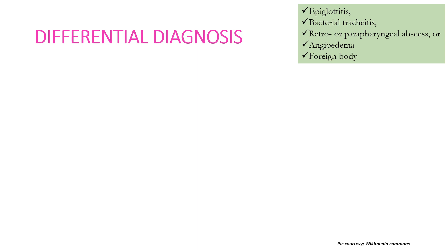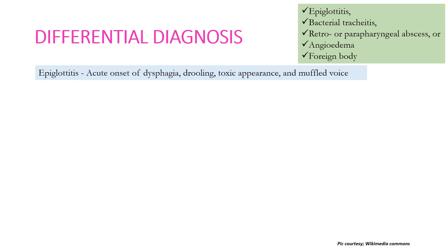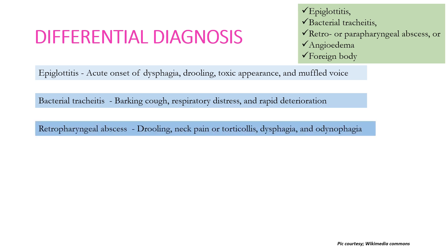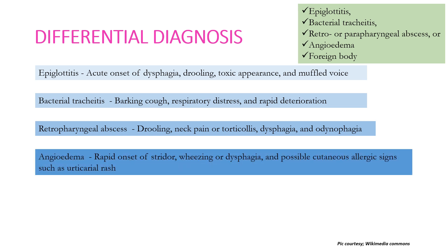Common differential diagnoses of croup include epiglottitis, bacterial tracheitis, retropharyngeal or parapharyngeal abscess, angioedema, and foreign body. Epiglottitis is characterized by acute onset dysphagia, drooling of saliva, toxic appearance, and muffled voice. Bacterial tracheitis presents with barking cough but with rapid deterioration. Retropharyngeal abscess presents with drooling, neck pain or torticollis, dysphagia, and odynophagia. Angioedema presents with rapid onset stridor, wheezing, and possible cutaneous allergic signs such as urticarial rash.